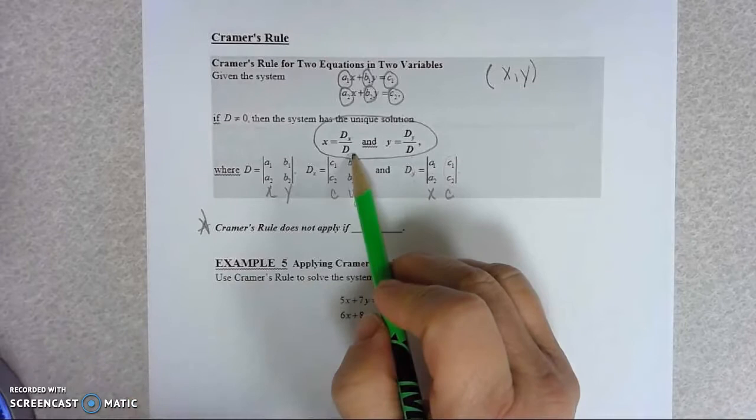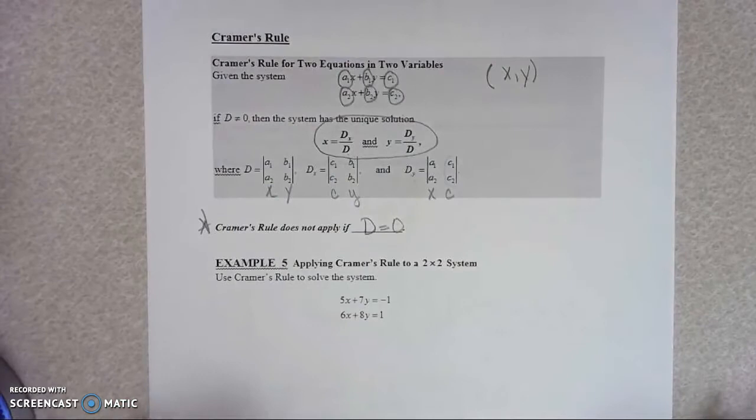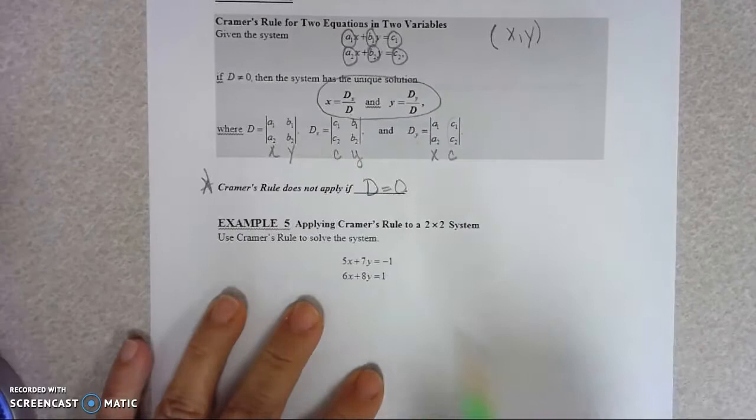But one thing to remember, if D is zero, that would mean your denominator would have zero. And you know, we can't have zero in our denominator. So Cramer's rule does not apply if D turns out to be zero. So just kind of remember that.